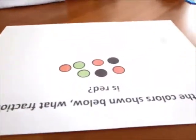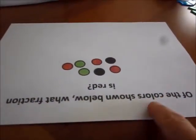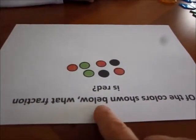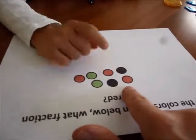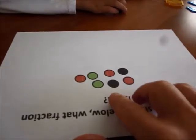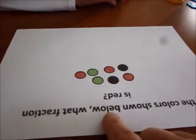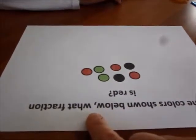I'm going to look at this problem. It looks similar, but it's a little different. This problem says, of the colors shown below, what are the colors that you see here? Green, red, and black. Of the colors shown below, what fraction is red?